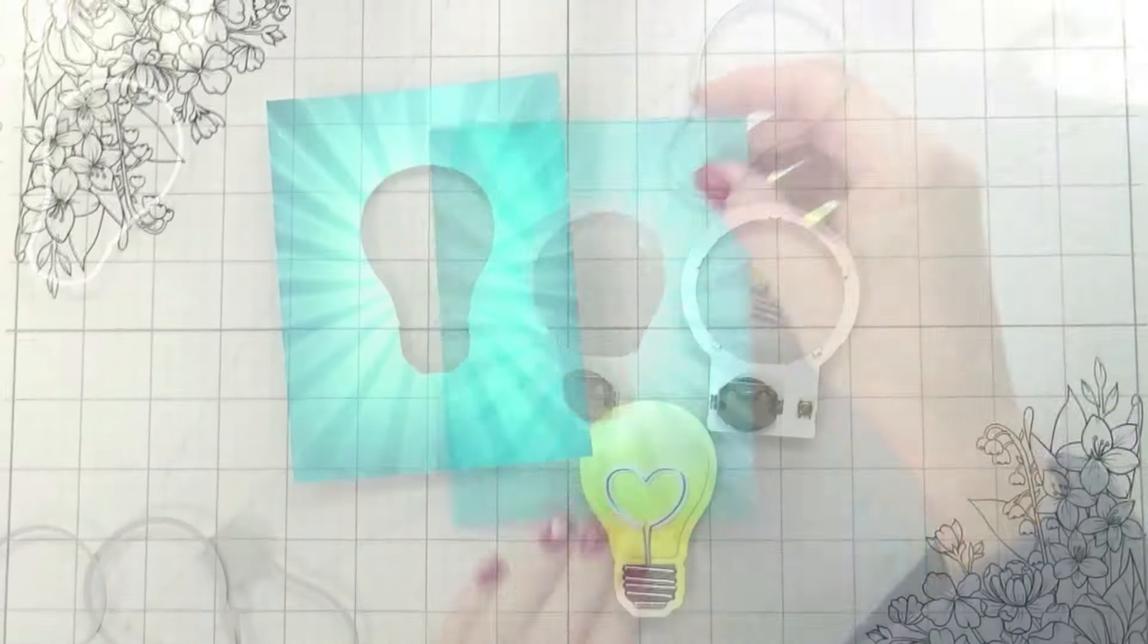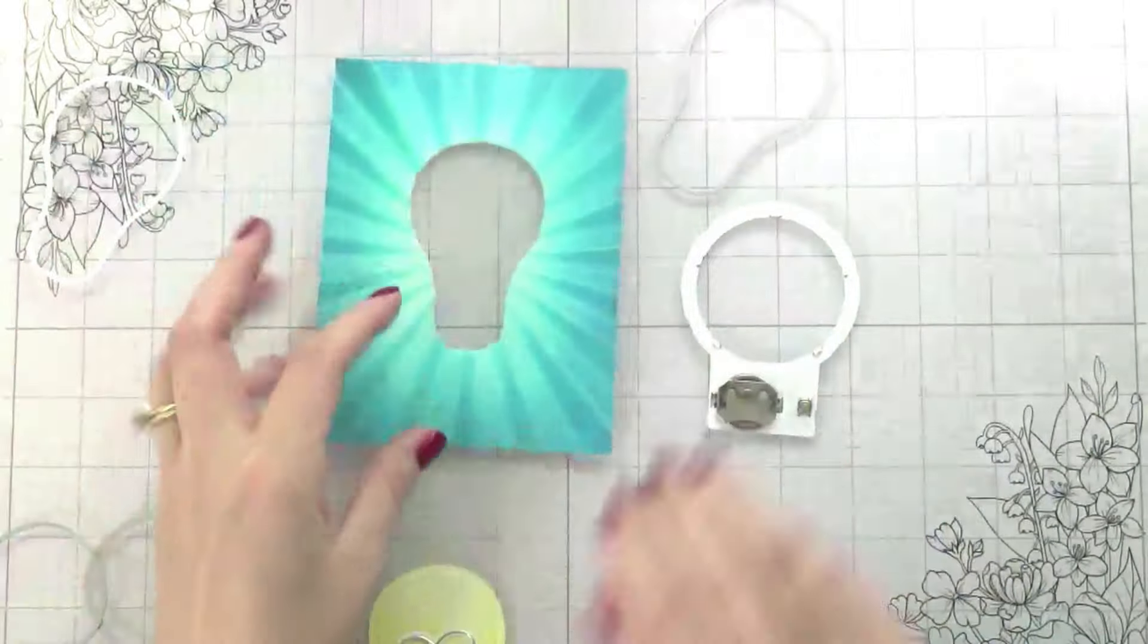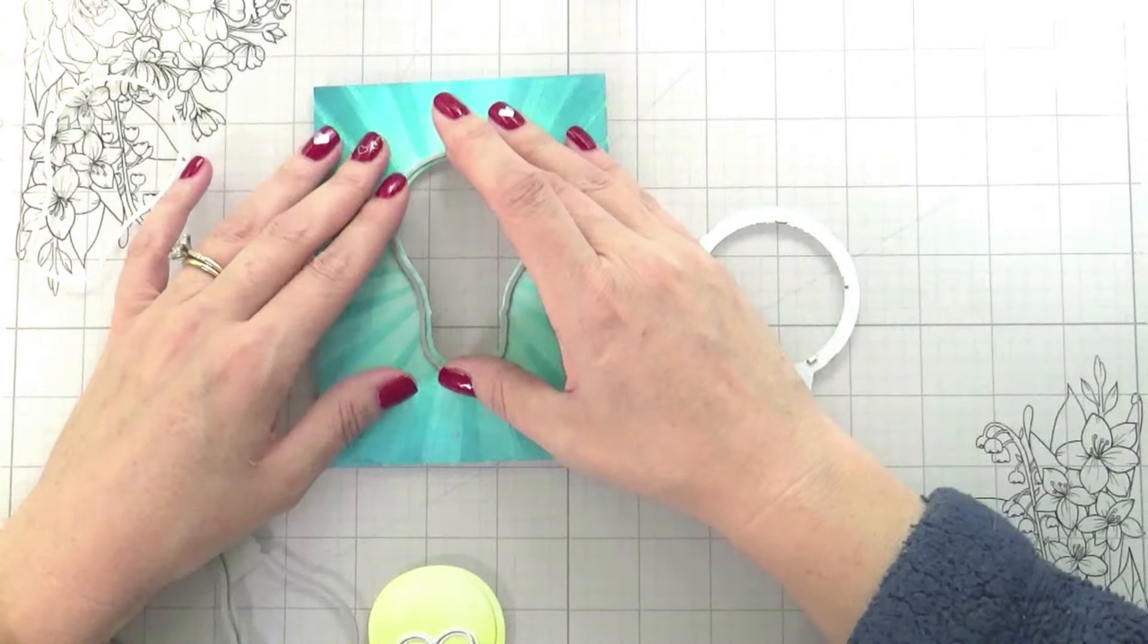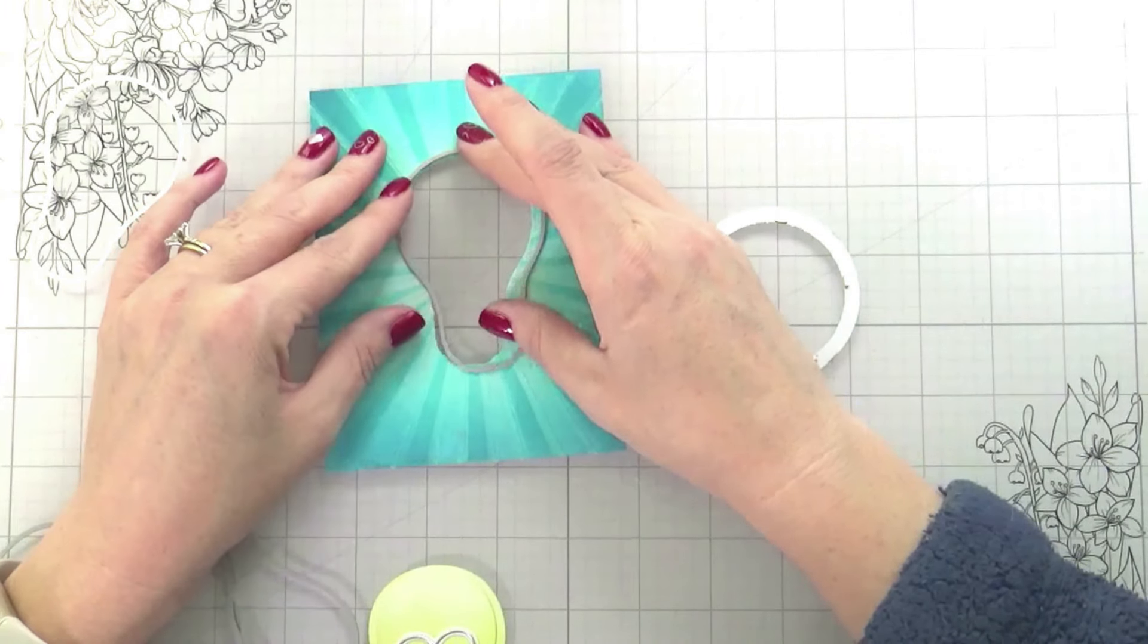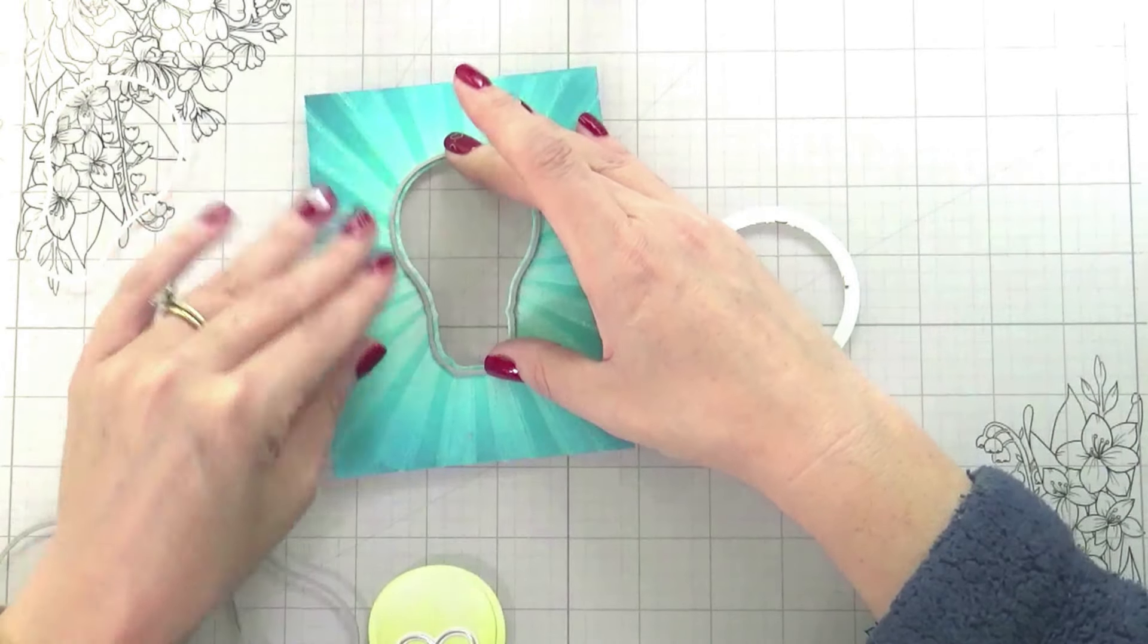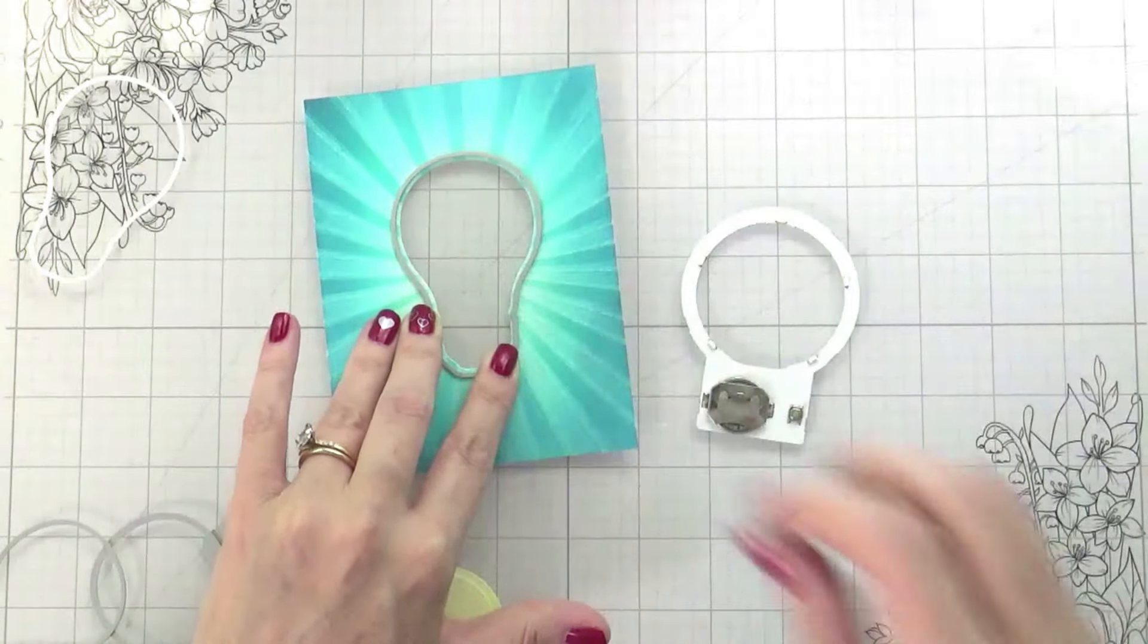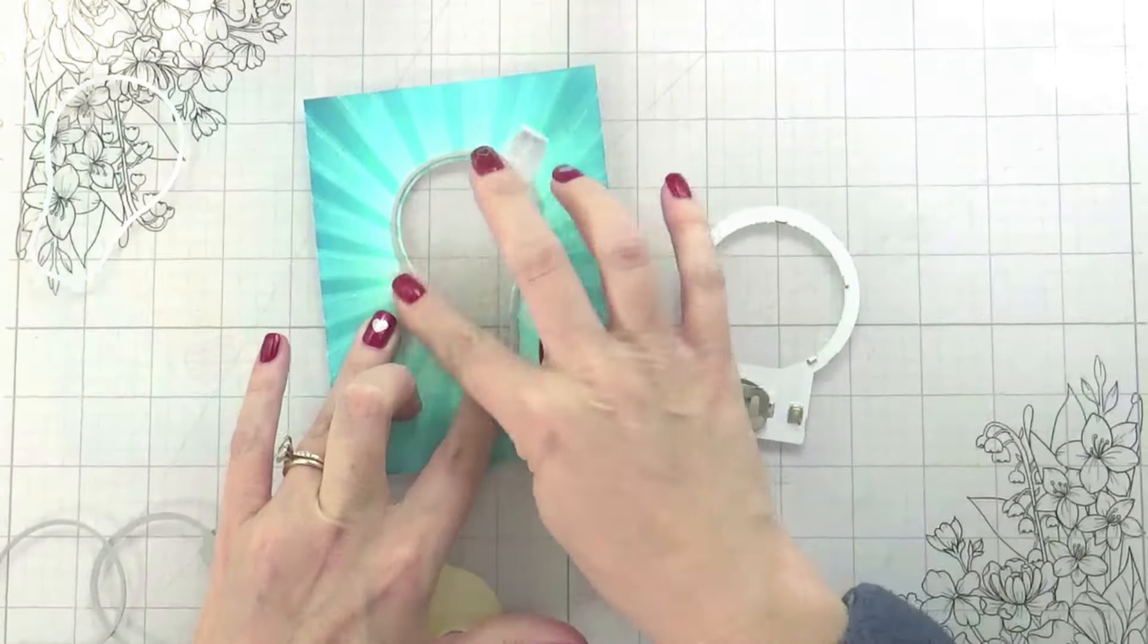You can see even without the shaker element, it would still light up and you would still see the light. However, I wanted there to be a shaker element, so I didn't want my light bulb to fill the entire space. I wanted there to be a little bit of a gap for what later on is going to be my vellum to help diffuse the light.